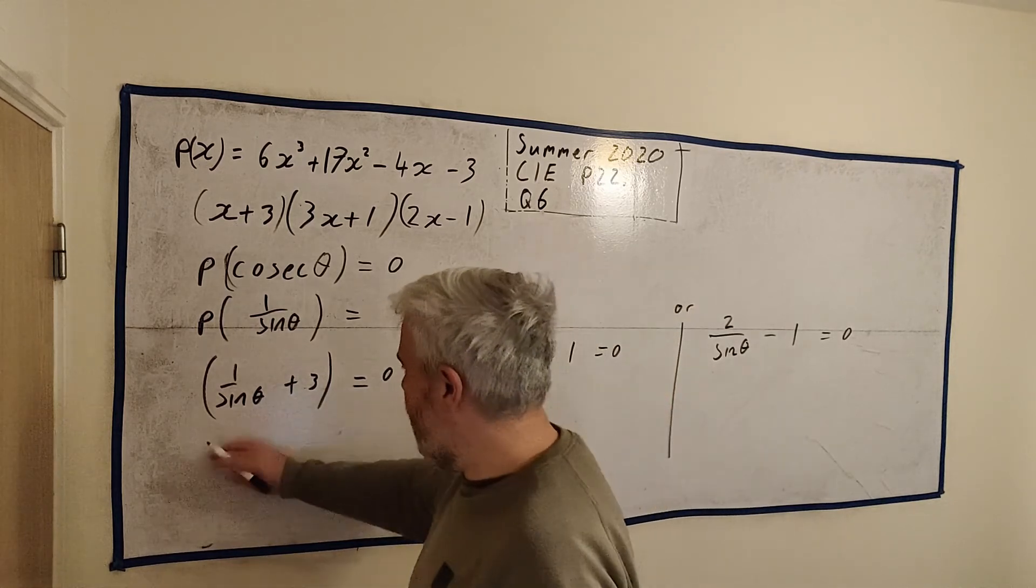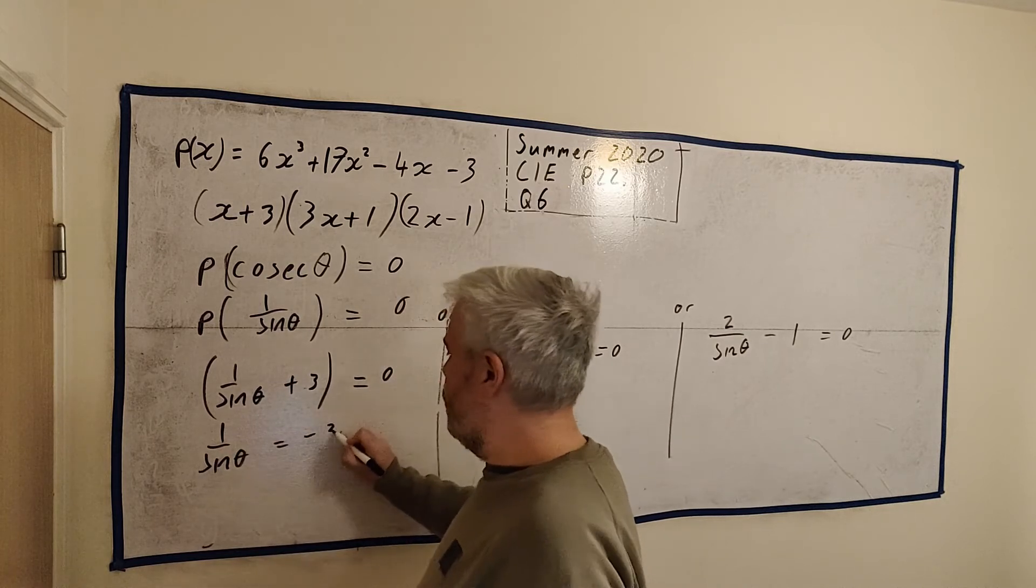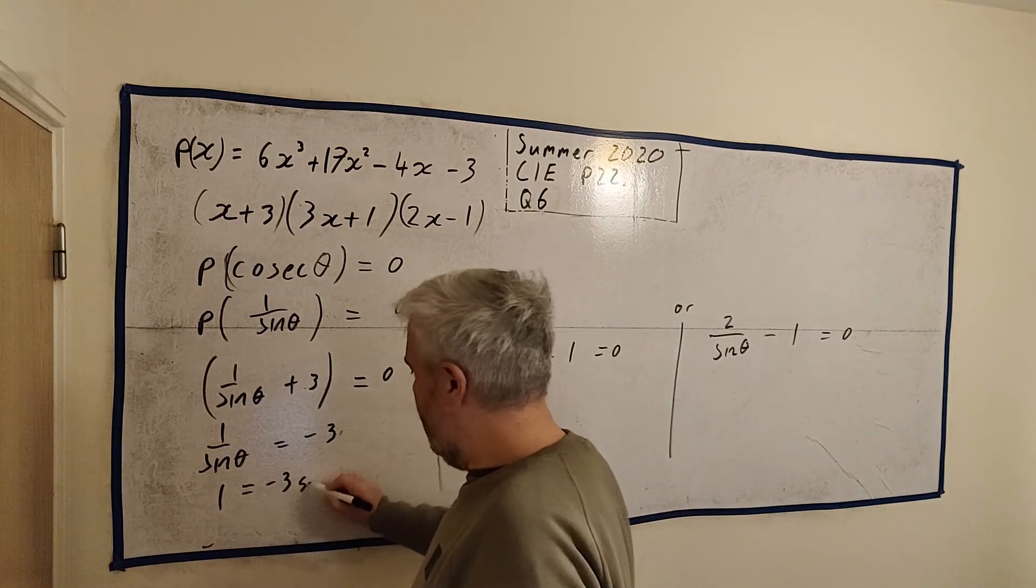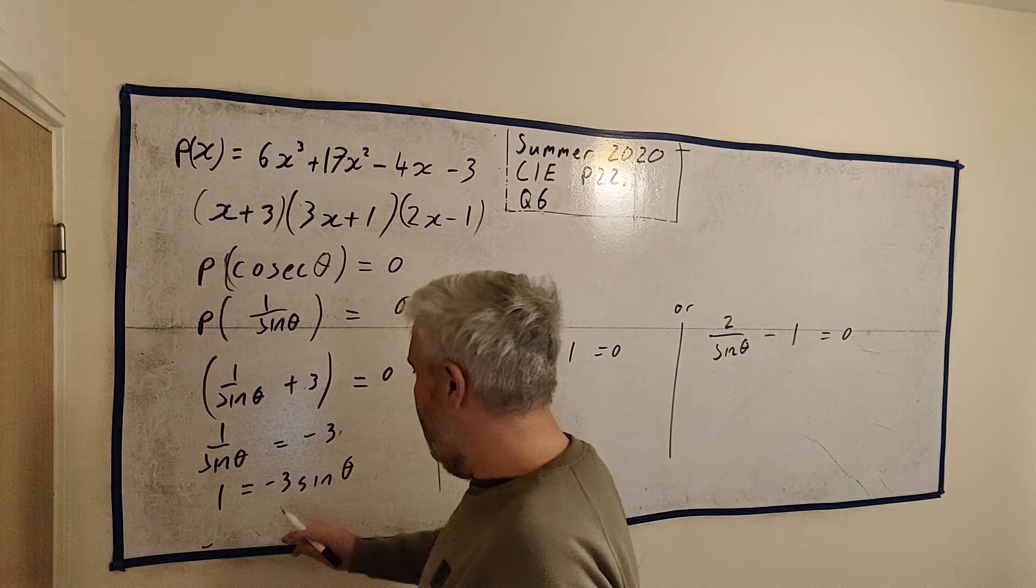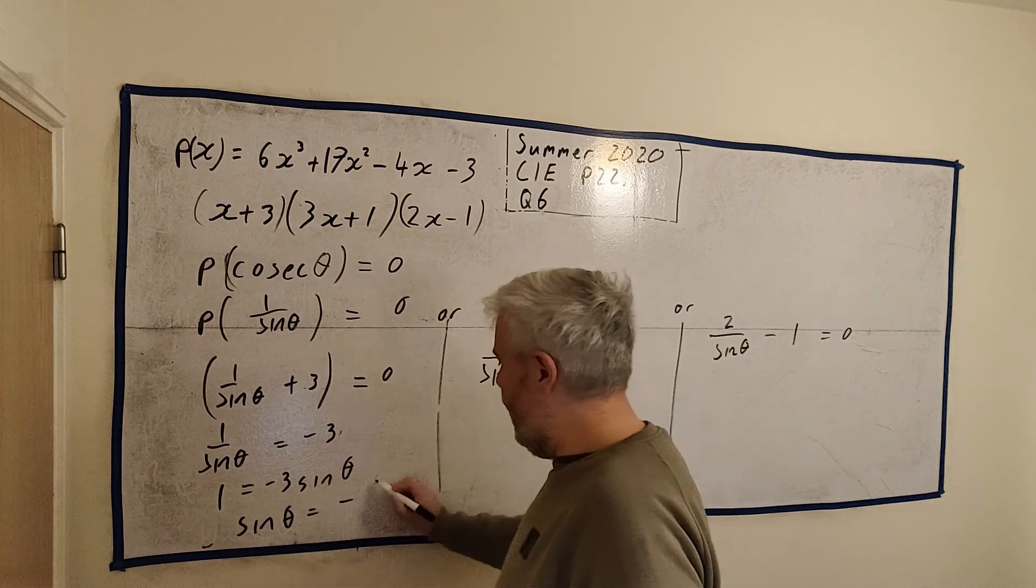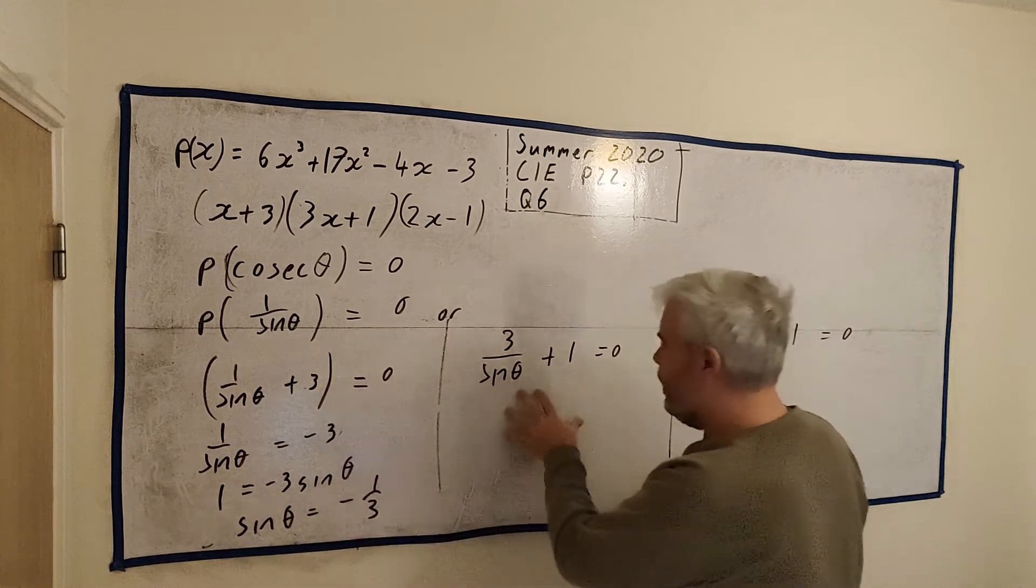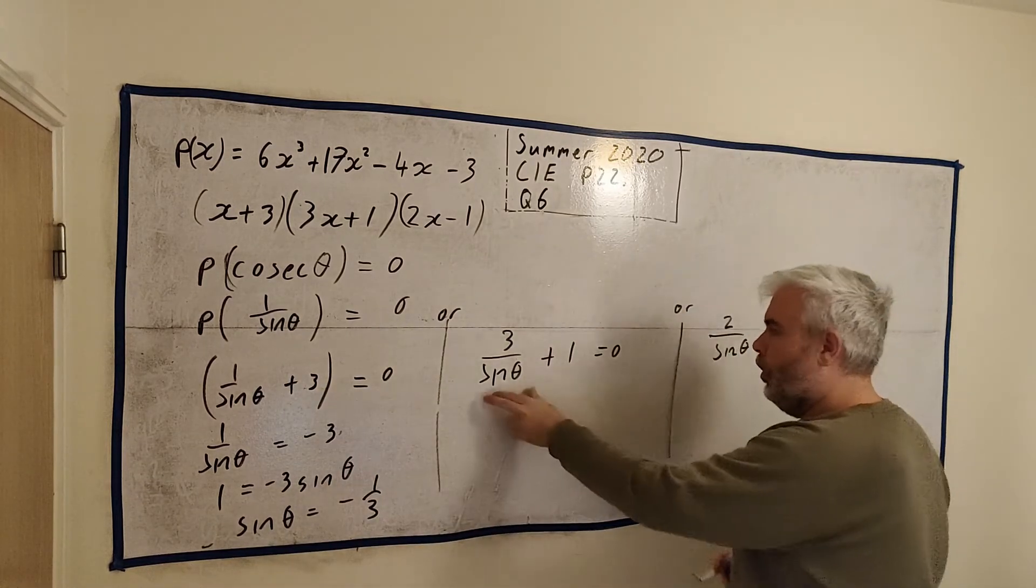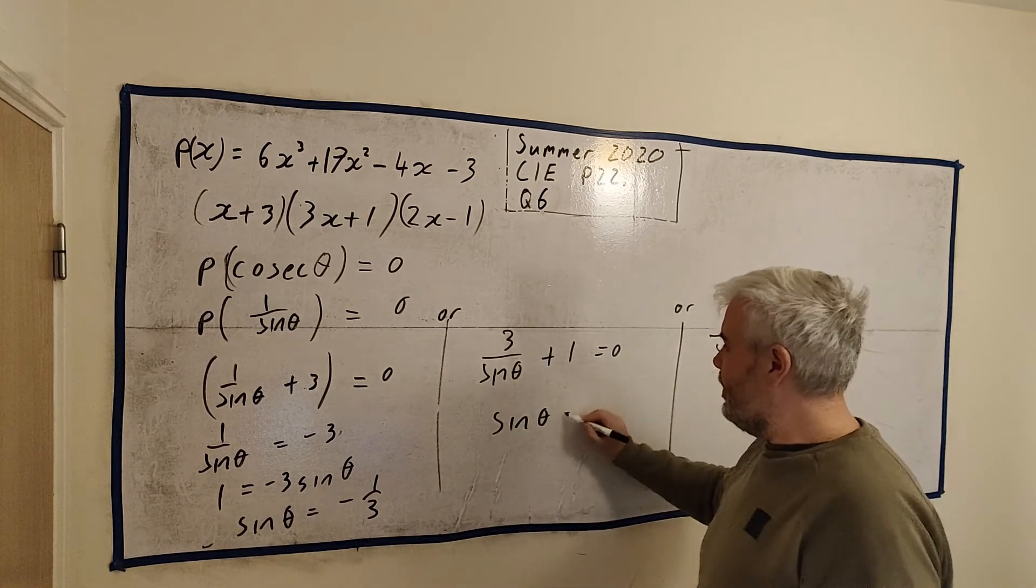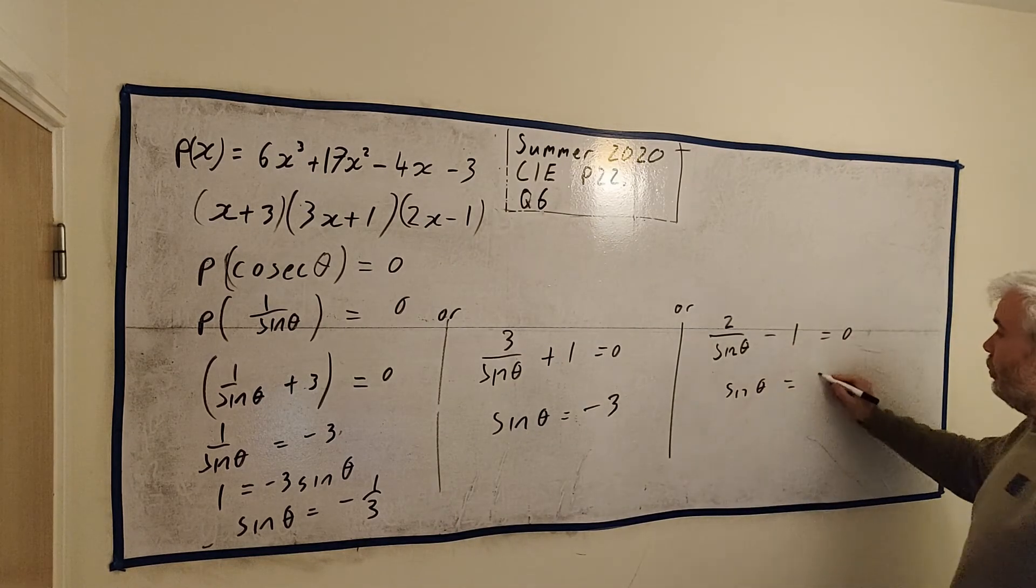Bring the 3 over, becomes minus 3. I'll do this one slowly and the other ones faster. 1 over sin theta is equal minus 3. Multiply both sides by sin. 1 is equal minus 3 sin theta. And divide both sides by minus 3. So we get sin theta is equal minus 1 over 3. So that would be one of these. If I do the same thing here, we get sin theta is equal minus 3. Do the same thing here. We get sin theta is equal to 2.